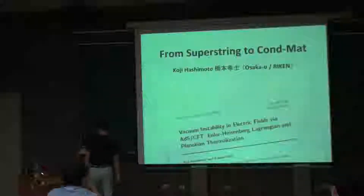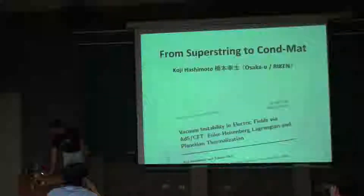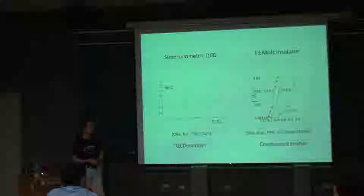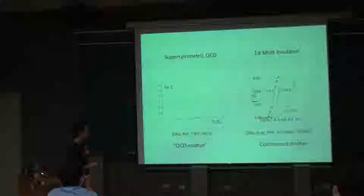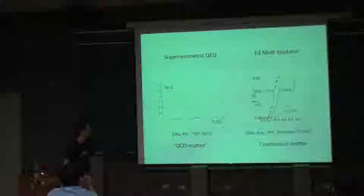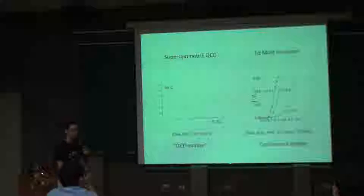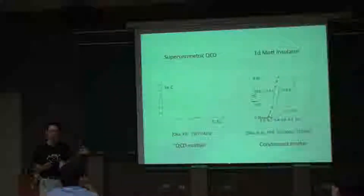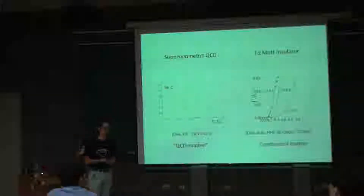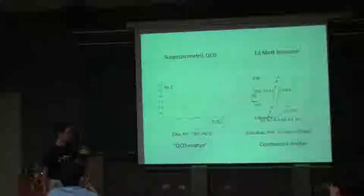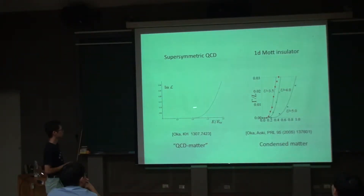What I'm concentrating on in this talk is this. Here is a picture taken from a condensed matter theory paper — it's a one-dimensional model. And on your left, this is a picture from our paper; it's on QCD. QCD is the dynamism which describes quarks and gluons in particles — it's not condensed matter theory — but as you can easily see, there is a similarity between these two.